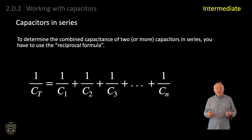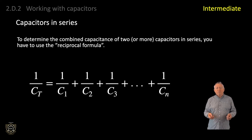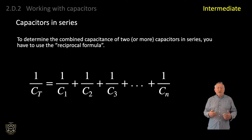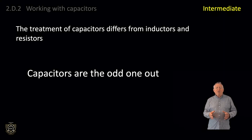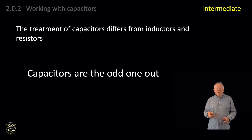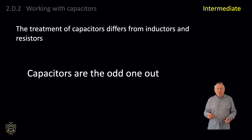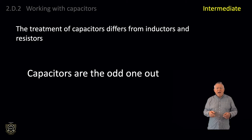1 divided by CT equals 1 divided by C1 plus 1 divided by C2 plus 1 divided by C3, and so on for however many capacitors you are considering. The way of obtaining the equivalent value of a number of capacitors differs from that of inductors and resistors — capacitors are the odd one out. Adding the component values for resistors or inductors together uses the same formula format: components in series simply add the values, and for components in parallel use the reciprocal formula. Whereas for capacitors, it is the other way round. A common mistake is to simply add the values of capacitors in series instead of using the reciprocal formula.